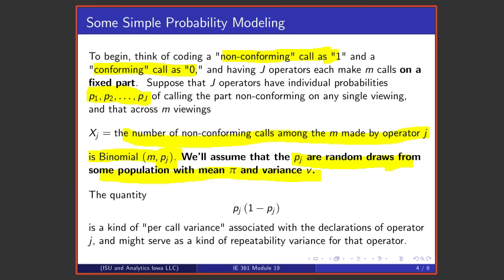Now the quantity for operator j—that is, that operator's p_j times (1 minus p_j)—amounts to a kind of per-call variance associated with that operator. Why is that?